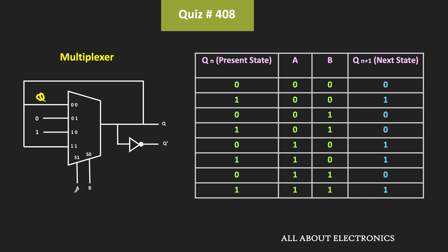When A is 1 and B is 0, the third input line will get connected to the output. As you can see, this third input is equal to 1, meaning the output Q will become 1. That means, for A equal to 1 and B equal to 0, irrespective of the present state of the circuit, in the next state this output will become 1.